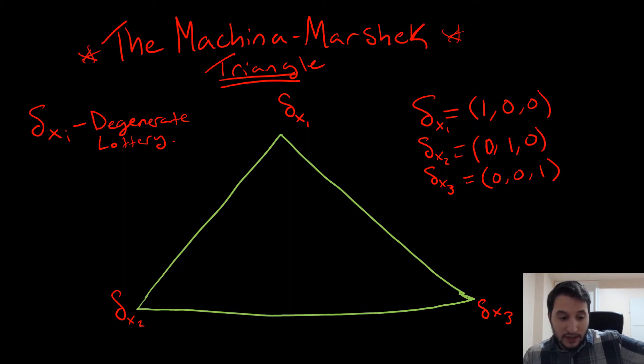So as we know, it's a triangle. And at each one of these vertices, we have this thing called a degenerate lottery, also referred to as a simple lottery. What that means is that it's a lottery known with certainty. So it's just you have a certain outcome over there.